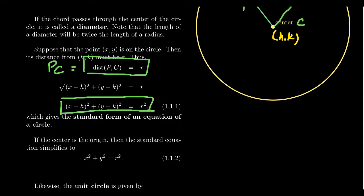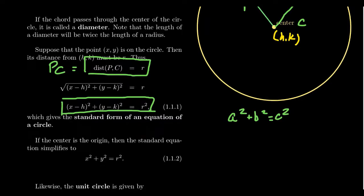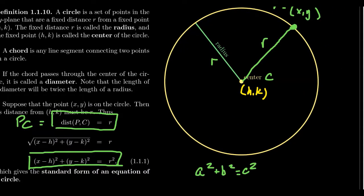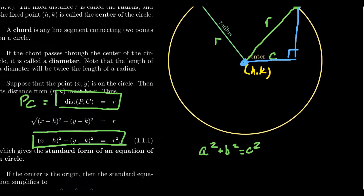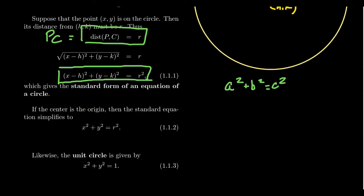The standard form of the equation of a circle is: x minus h squared plus y minus k squared is equal to r squared. This equation looks very much like the Pythagorean equation a squared plus b squared equals c squared. That's because given any point on a circle, you can construct a right triangle inside the circle where one corner coincides with the center and the radius coincides with the hypotenuse. This standard equation is just the Pythagorean equation with a fixed center but variable points on the circle.